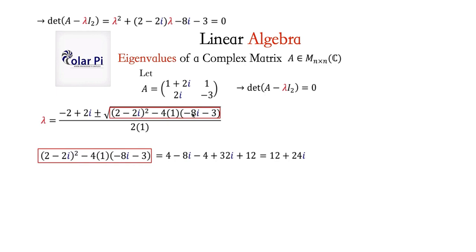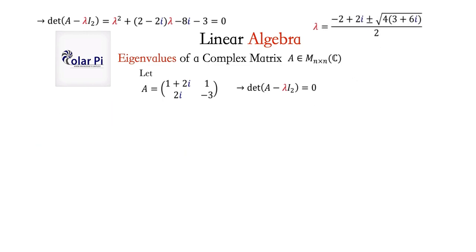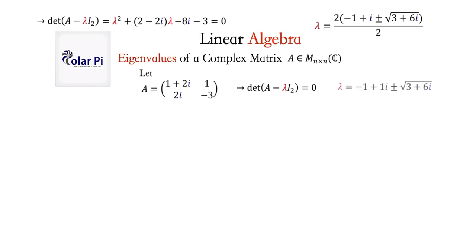So what's inside the square root is 12 plus 24i. We can simplify further because we can factor out a 4 from these two terms. I want to factor out a 4 — not 12 — because 4 is a perfect square whereas 12 isn't. So the square root of 4 times (3 plus 6i) gives us a 2 outside the square root. Notice the numerator then has a 2 in every term, so we can factor out a 2 from the entire numerator and cancel with the 2 in the denominator. After all that, lambda equals minus 1 plus i plus or minus the square root of 3 plus 6i.